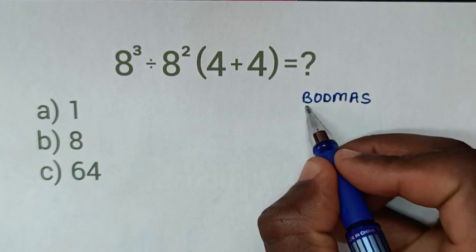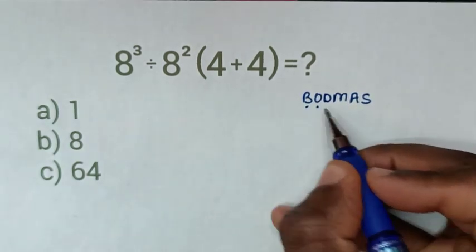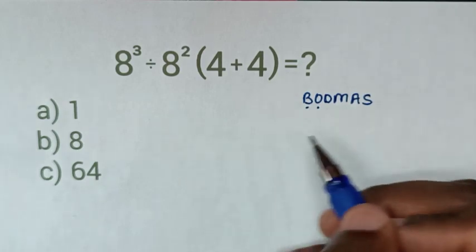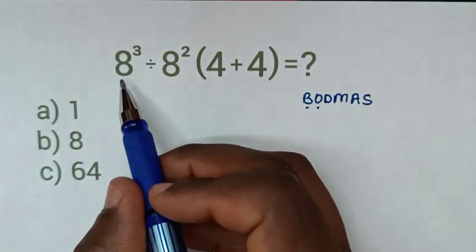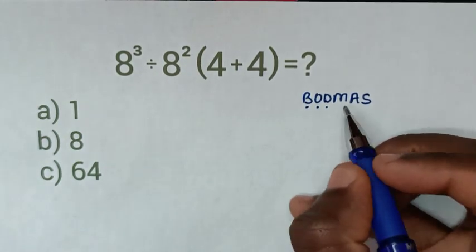This B is bracket, whereas we have bracket. O is order, or exponents, or powers, whereas we have power 8 power 3 and 8 power 2. And D is division,